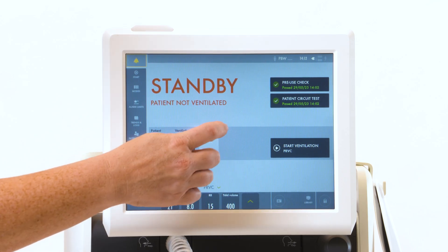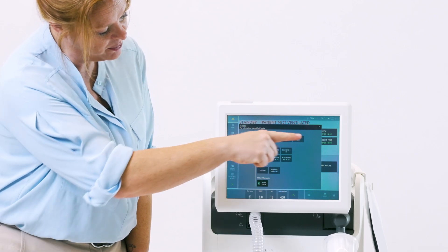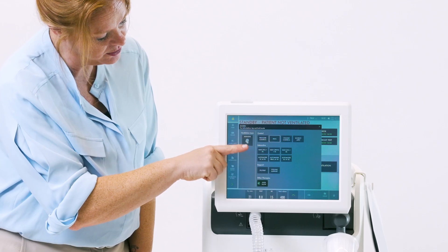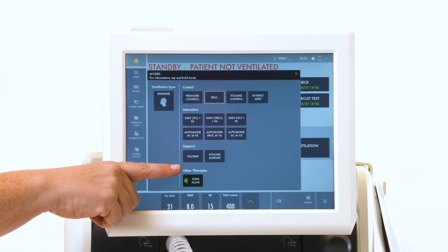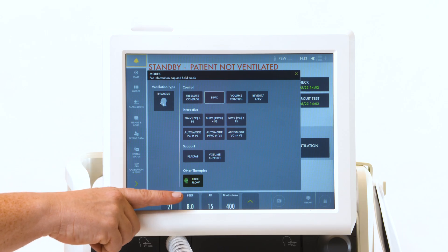Your modes are located here. The top ones being anything control. Your middle two are your interactive modes. At the bottom are supported modes with your high flow at the very end.